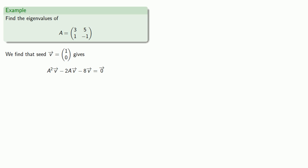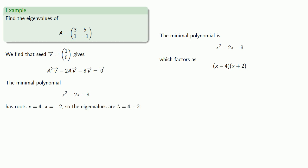Now this gives us the minimal polynomial x squared minus 2x minus 8, which, because the universe is kind and gentle, will factor. Okay, we can't always count on this factoring, but in this particular case it does. And so the roots of this equation are x equals 4, x equals minus 2, and so the eigenvalues are 4 and negative 2.